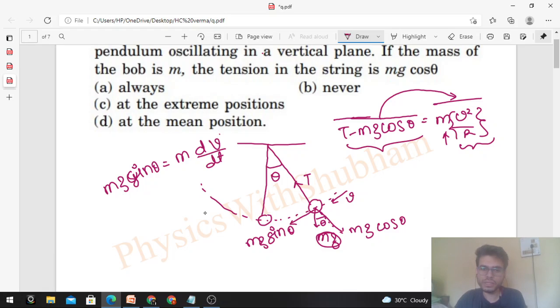by dt, because tangential acceleration is dv/dt, the rate of change of speed. So we have 2 equations now. We have to tell when the tension's value equals mg cos θ. If tension equals mg cos θ, then this term becomes zero,